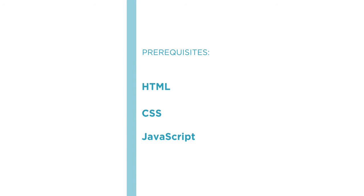To be clear, accessibility is not a checklist or a product, and doing everything exactly as I demonstrate here in this course will not guarantee an accessible compliance site. Even though I'll be going over specific tips and code examples that you can use over and over again, it's important to note that meeting guidelines is completely dependent on your particular site and content.